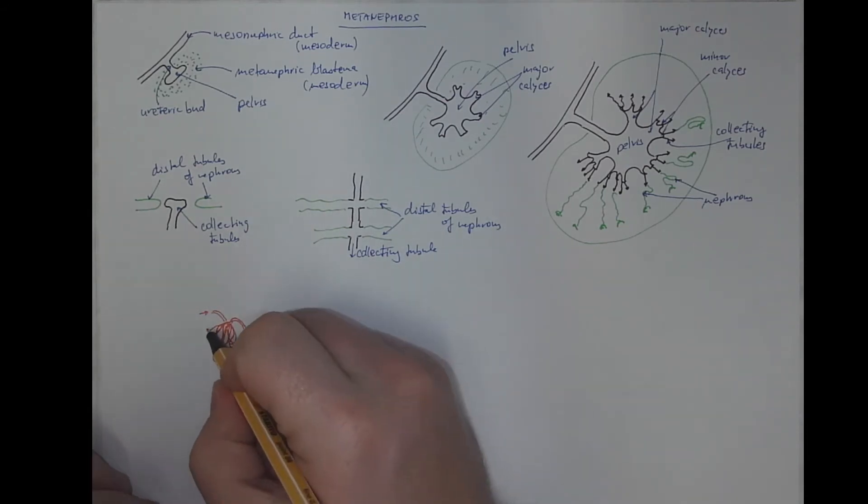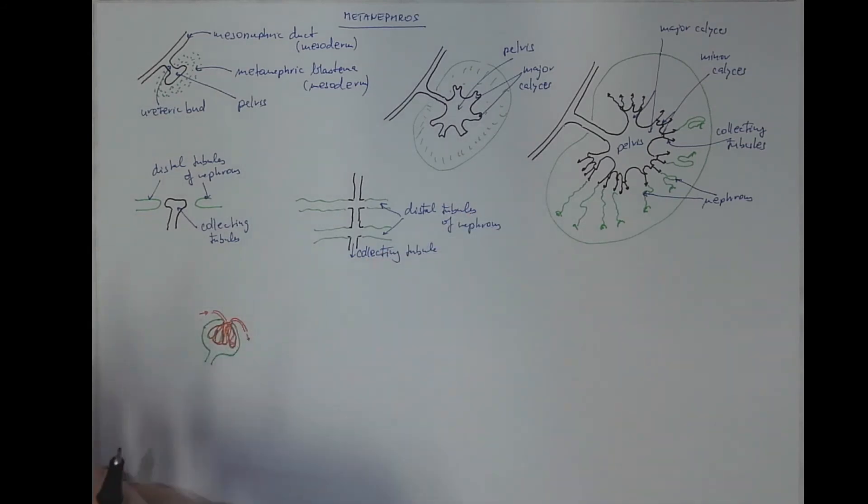Both become surrounded by the Bowman's capsule with its parietal layer and the visceral layer of podocytes that are embracing the endothelial cells of the capillaries.